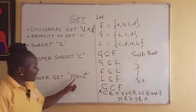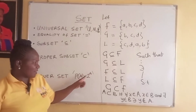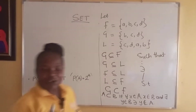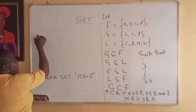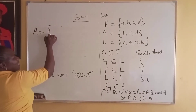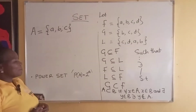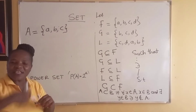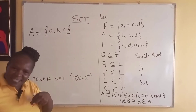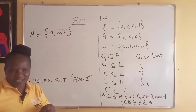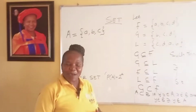The power set of A is denoted P(A) or the script P of A. Given a set A = {a, b, c}, the power set contains all subsets of A. Note that every set is a subset of itself — because every element is in it — and the empty set is a subset of every set.